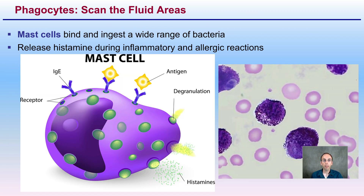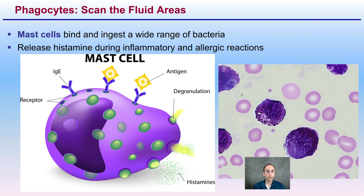Then we have mast cells, which bind and ingest a wide range of bacteria. They also release histamine — which you might be familiar with if you have allergies — during inflammation and allergic reactions. Those histamines can become overactive and cause allergic reactions, which is why many people take antihistamines to help mute or reduce their impact on the body. When over-regulated, it can be quite the annoyance.